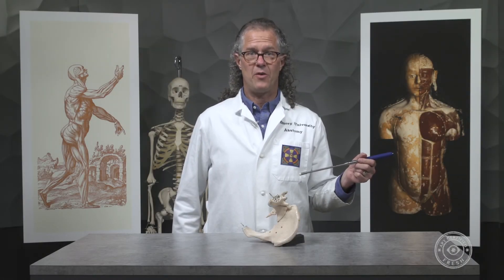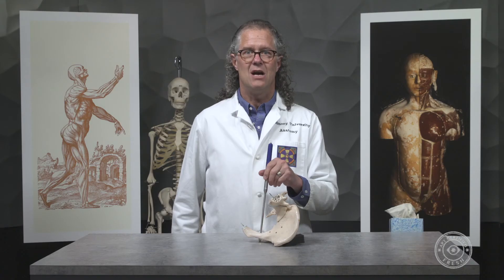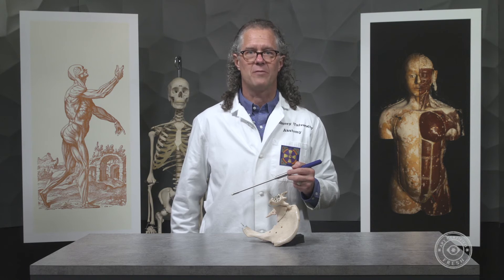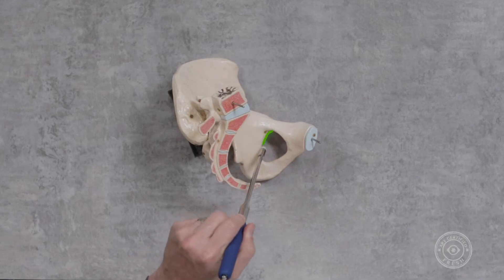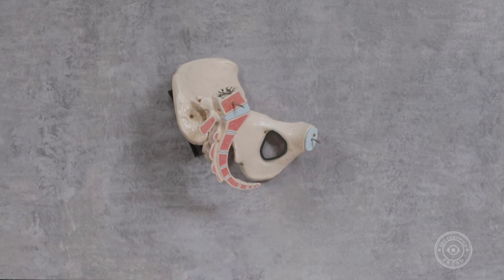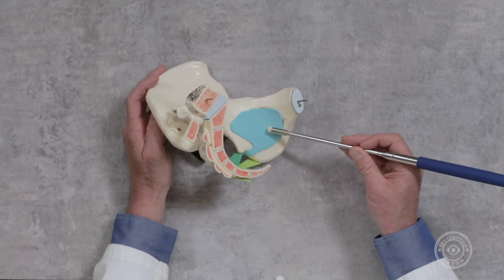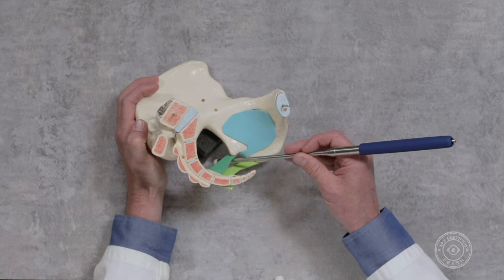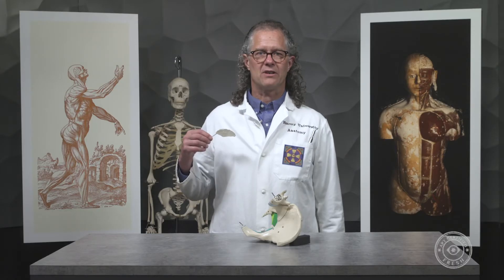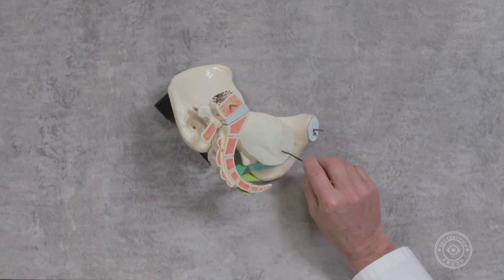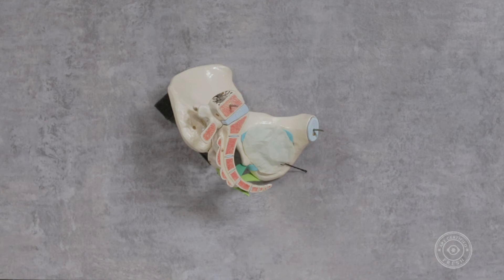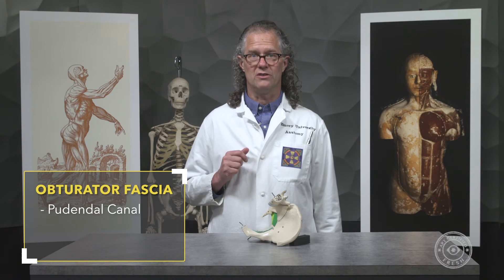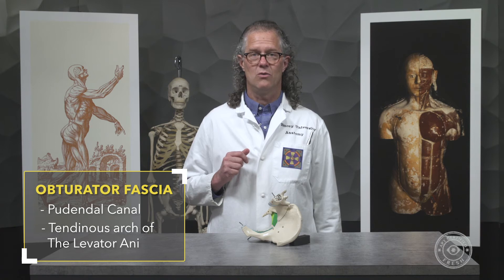We are looking at the inner surface of the left half of the pelvis. Notice the obturator foramen. With soft tissue in place, the obturator foramen is covered by a muscle, the obturator internus. The muscle attaches around the border of the foramen and covers the opening. See the obturator internus forming part of the lateral wall of the pelvis. Note that the tendon of the obturator internus exits through the lesser sciatic foramen between the sacrospinous and sacrotuberous ligaments. The obturator internus muscle is covered by a membranous fascia called the obturator fascia. Two specialized structures are formed by modifications of the obturator fascia: the pudendal canal, which is associated with the pudendal nerve and artery, and the tendinous arch of the levator ani muscle, which we will discuss next.